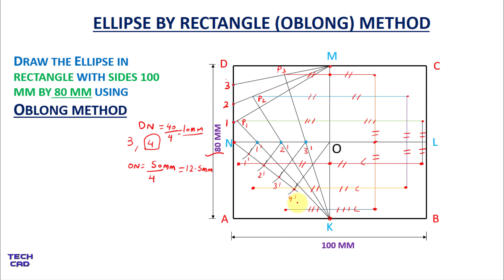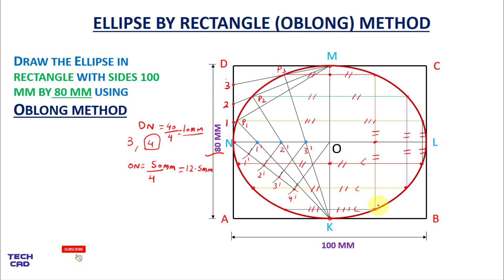Students, now you can join these points freehand or you can also use French curves. This is the profile of your ellipse drawn with the help of the oblong method. I hope you understand this question — if you have any queries, comment in the comment section. Thanks for watching, be happy.